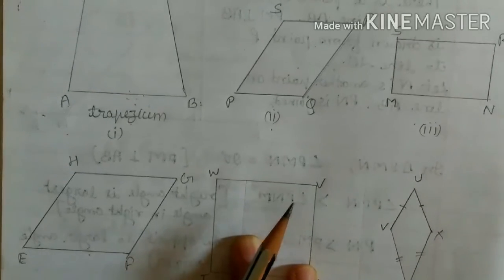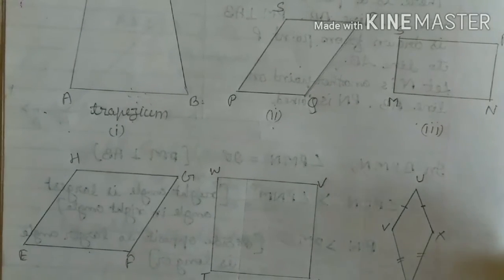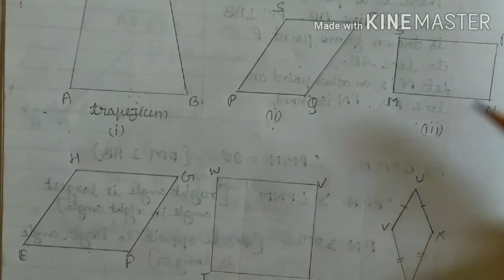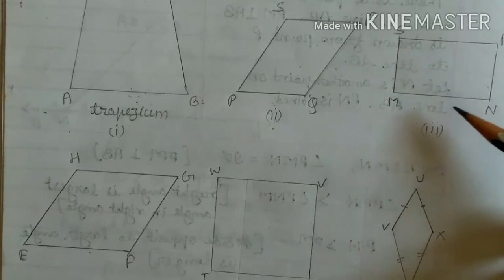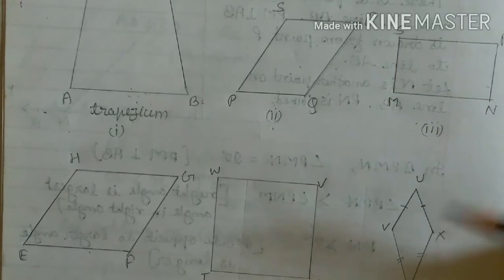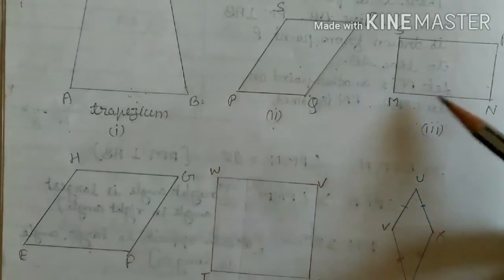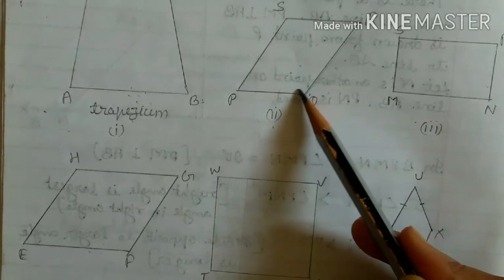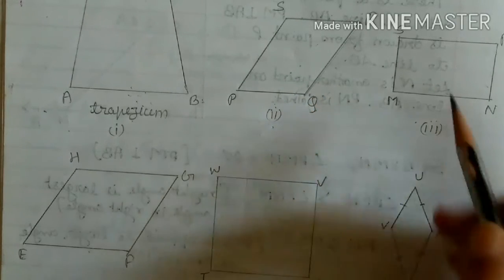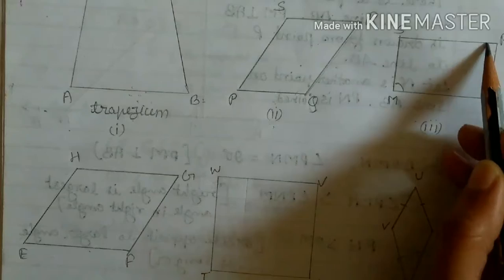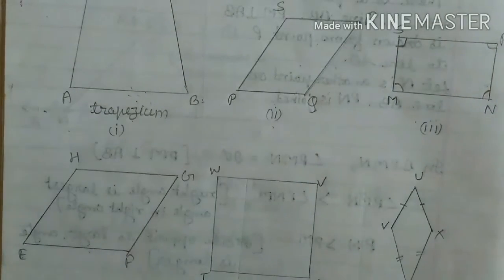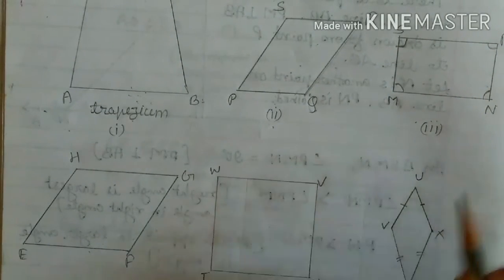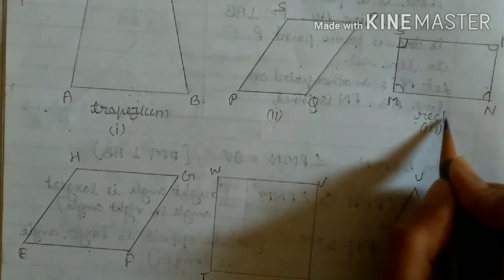Now here you see parallelogram M, N, R, S. In this parallelogram, all four angles are right angles — each angle is 90 degrees. So this is why we can say it is a rectangle.